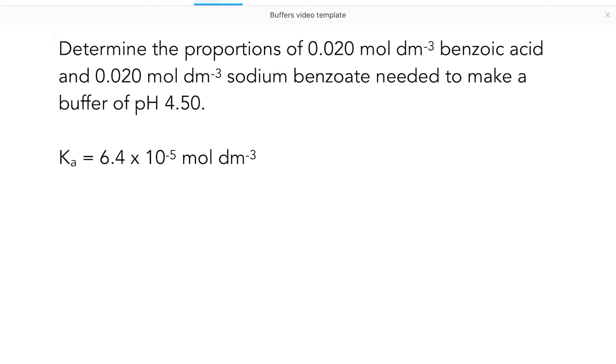And finally, a type of buffer question where we've been asked to determine the proportions of the weak acid, benzoic acid, and its salt, sodium benzoate, needed to make a buffer of pH 4.5.